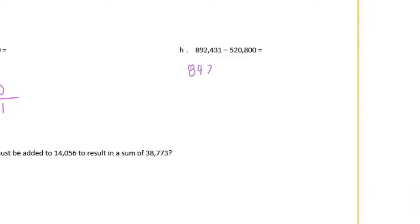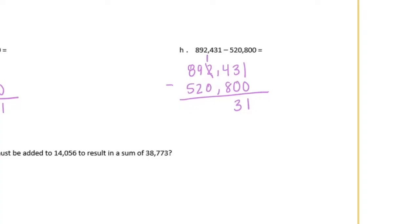H: 892,431 minus 520,800. All my place values are lined up. 1 minus 0 is 1, 3 minus 0 is 3, 4 minus 8 we can't do — borrow from the 2, it becomes a 1, this becomes 14 minus 8 which is 6. 1 minus 0 is 1, 9 minus 2 is 7, and 8 minus 5 is 3. We have 371,631.